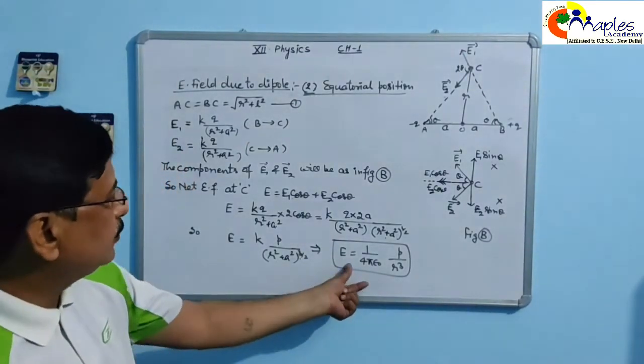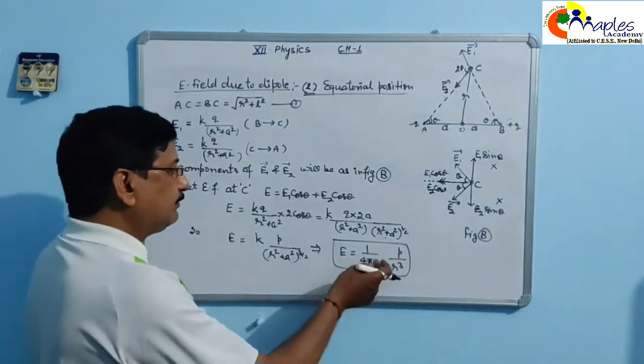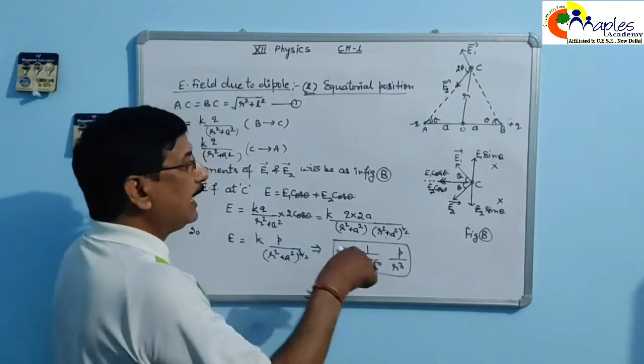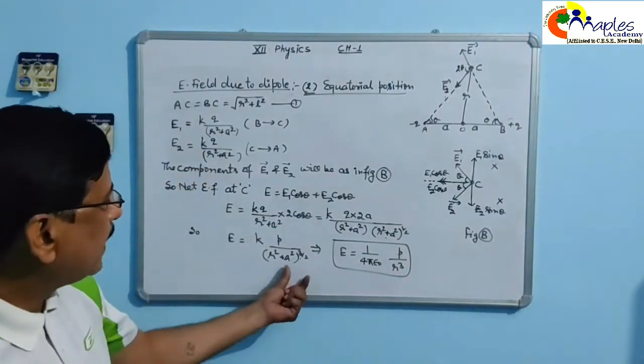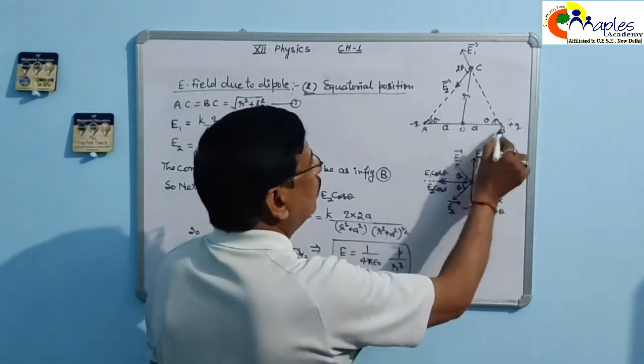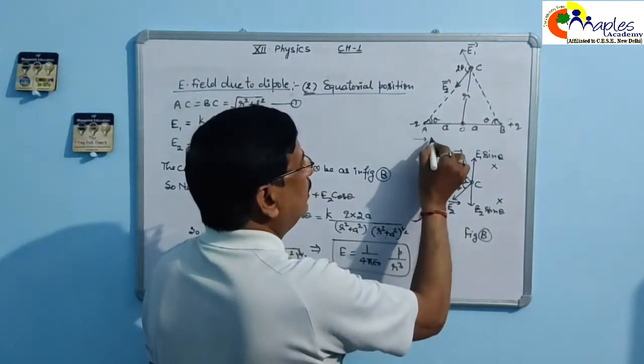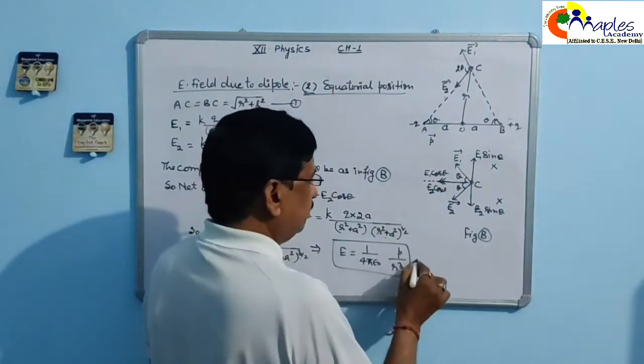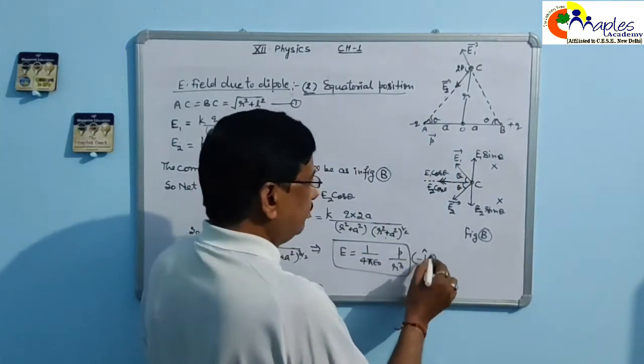For the equatorial position, the direction is opposite to P. So we will write minus P upon 4πε₀(R² + A²)^(3/2).